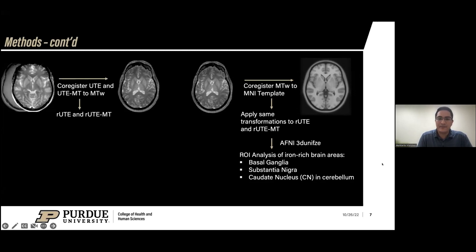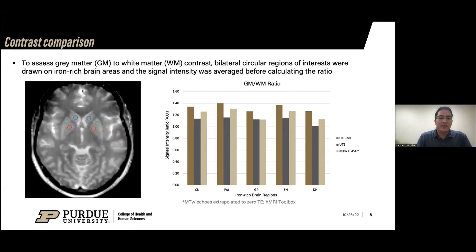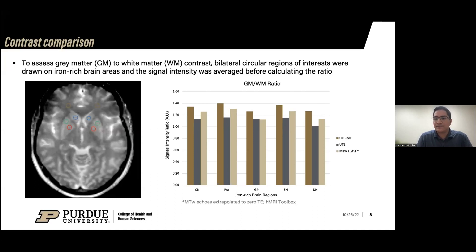Here are some of our initial results. This shows how we drew the ROIs in the MT-weighted images. We see increased contrast between gray matter and white matter throughout all these regions, specifically higher in the substantia nigra and the dentate nucleus, compared to the regular UTE which doesn't have a lot of contrast between gray matter and white matter — it looks more like a proton density image. The conventional MT-weighted FLASH processing corrects for inhomogeneities; we acquire a B1 map and a sensitivity map for the head coil and body coil, and the toolbox does an extrapolation to a TE of zero.